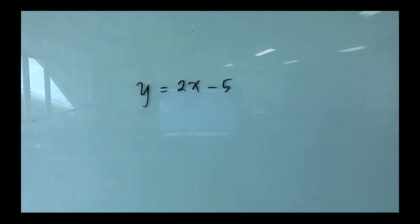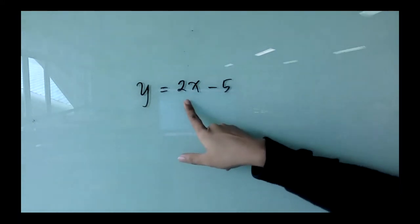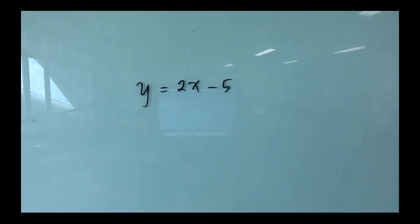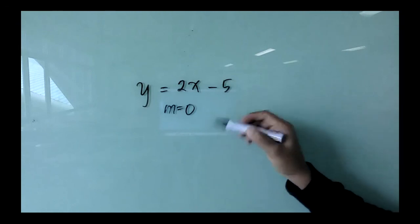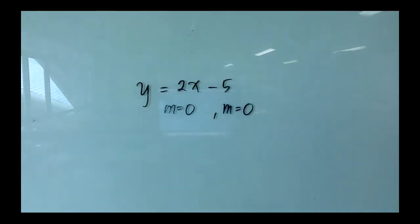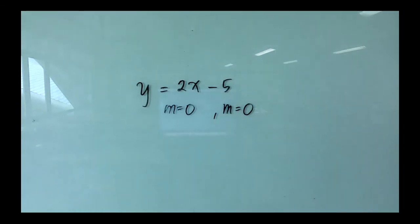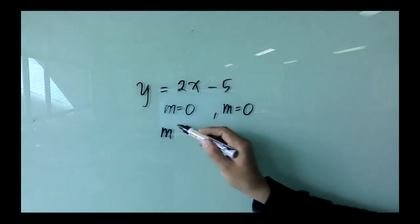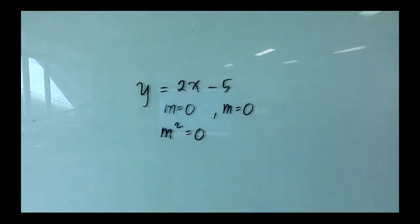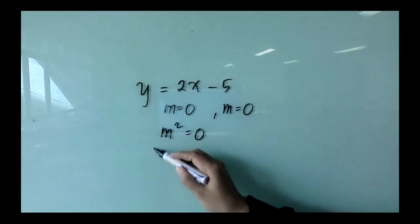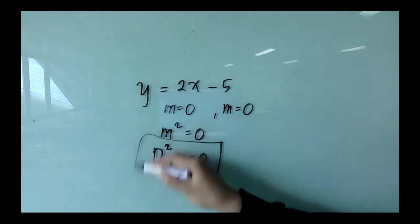Before ending, here's one more example you might find tricky: y = 2x - 5. For the first term 2x, the root is 0; for the second term -5, the root is also 0. So the root 0 has repeated twice — you don't add an extra 0 separately. Therefore m² = 0, and the differential equation is d²y = 0.